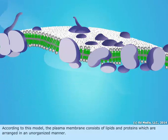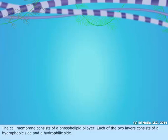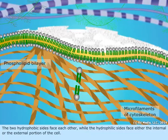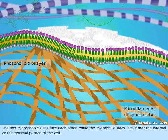The cell membrane consists of a phospholipid bilayer. Each of the two layers consists of a hydrophobic side and a hydrophilic side. The two hydrophobic sides face each other, while the hydrophilic sides face either the internal or the external portion of the cell.